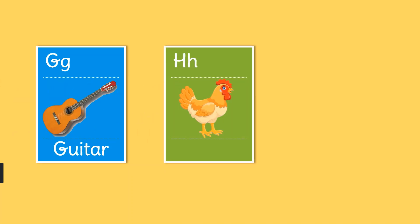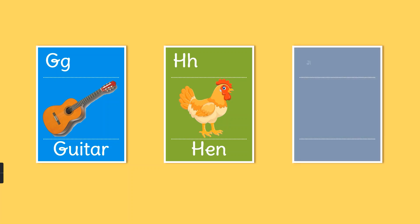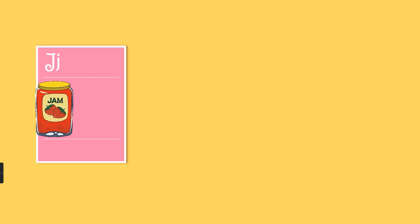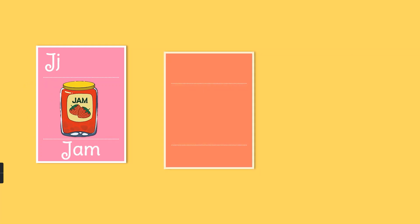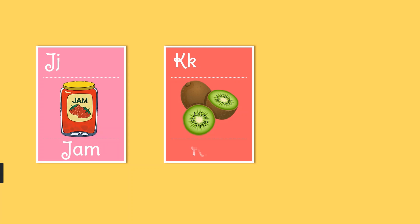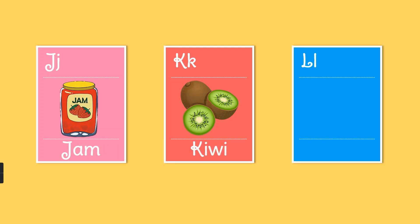H. H for hen. I. I for ice cream. J. J for jam. K. K for kiwi. L. L for leaf.